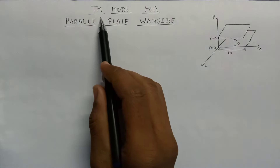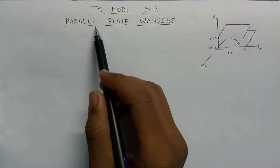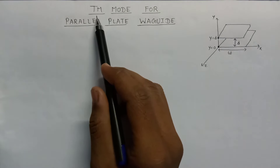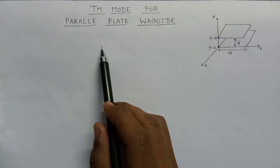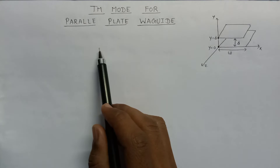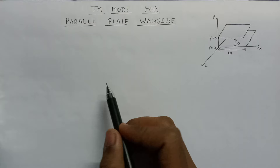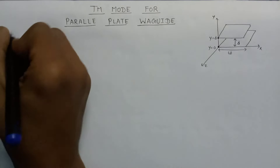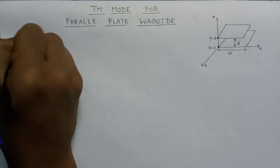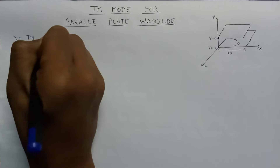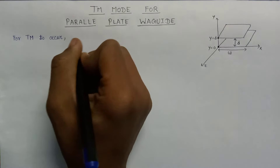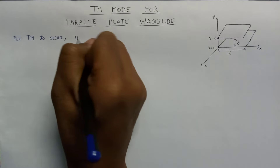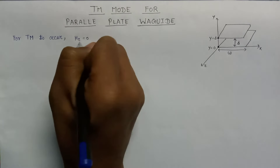Let us discuss about the TM mode first. The TM mode stands for transverse magnetic mode, meaning all the magnetic fields are transverse. Therefore, we can say that there will be no magnetic field in the z direction, that is hz equals zero. So for TM mode to occur, the component of magnetic field in the z direction, hz, will be equal to zero.